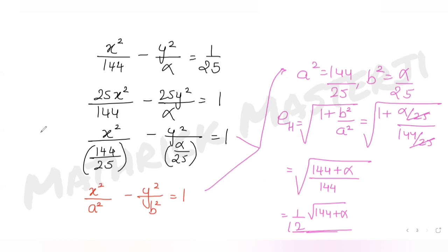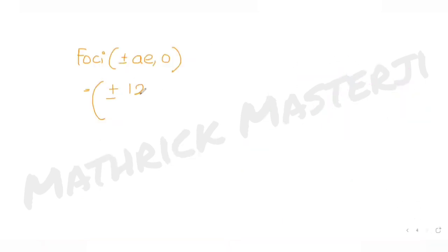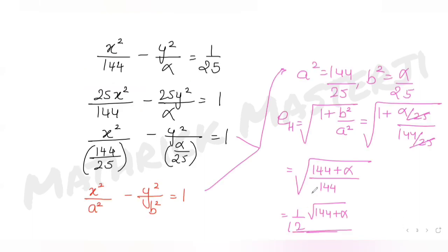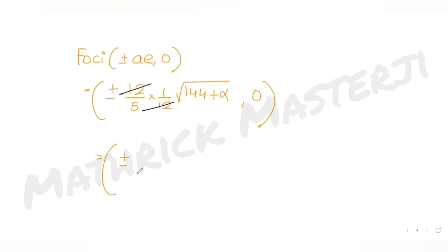Using the foci formula (±ae, 0) for the hyperbola: a = 12/5 and e = (1/12)√(144 + alpha), so ae = (12/5) × (1/12)√(144 + alpha) = √(144 + alpha)/5. The foci of the hyperbola are at (±√(144 + alpha)/5, 0).